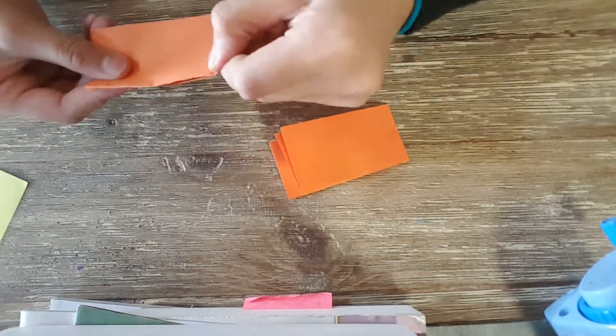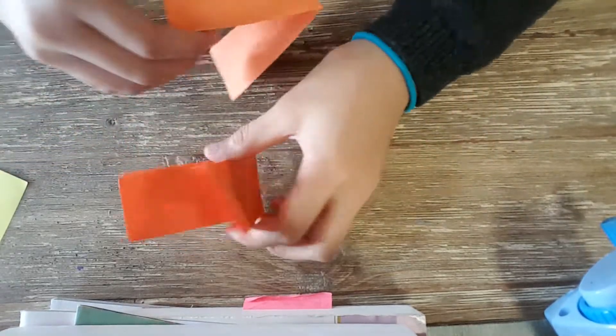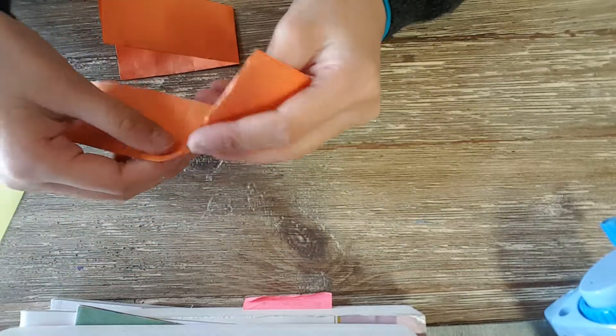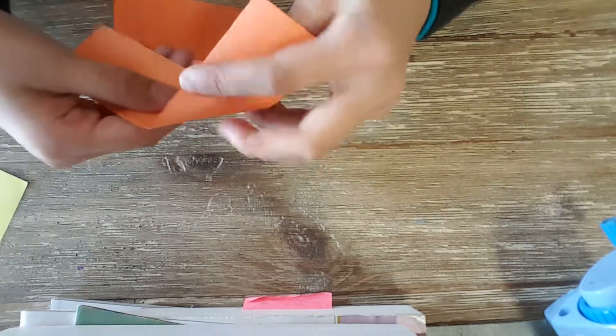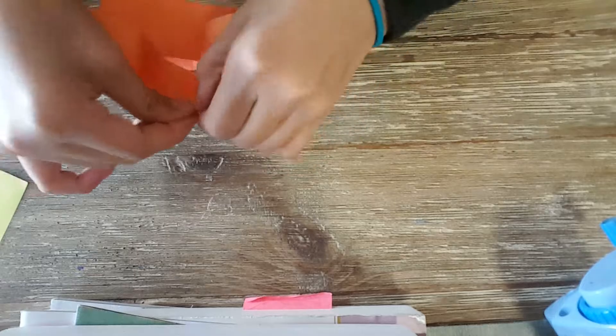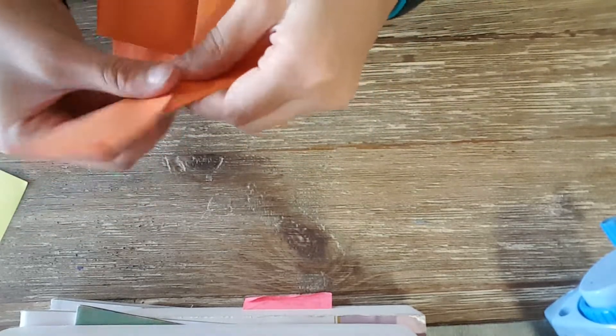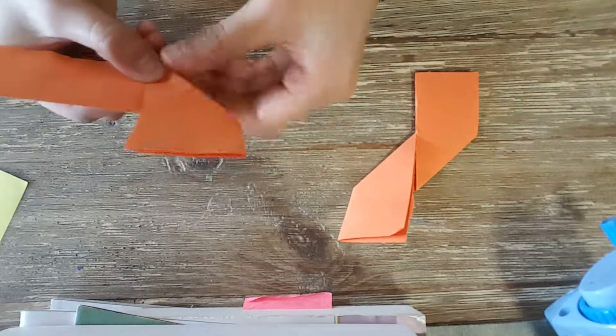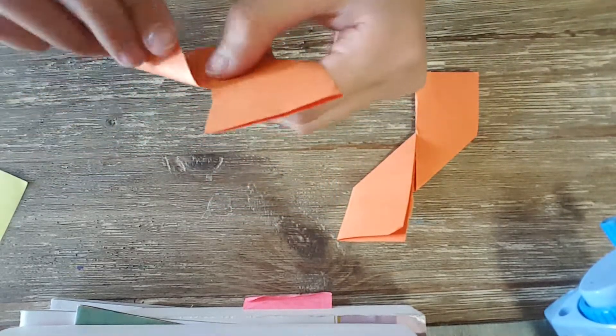The difference here is that one of them, you're going to fold on the left side from the middle line down, and on the right side you're going to fold up. For the other one, the left side you're going to fold up, and the right side you're going to fold down.